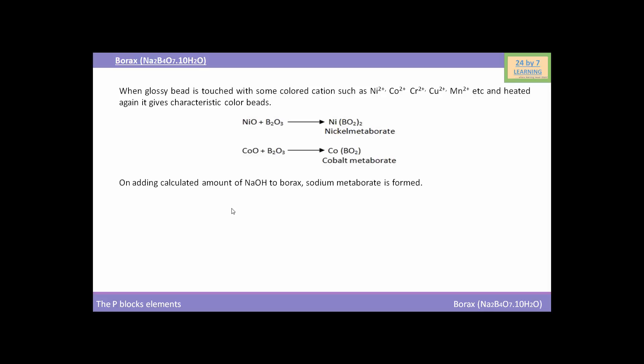On adding calculated amount of sodium hydroxide to borax, sodium metaborate is formed. Here is the reaction. You can see Na2B4O7, i.e. borax, when will react with NaOH, sodium hydroxide, then the reaction will yield NaBO2, i.e. sodium metaborate.